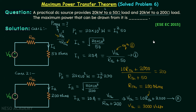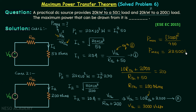The maximum power that can be drawn from the practical DC source is P_max equal to Vth squared divided by 4 times Rth, which is 3000 squared divided by 4 times 100, giving 400 in the denominator. Simplifying gives P_max equal to 22,500 watts, or 22.5 kilowatts. This is our answer.